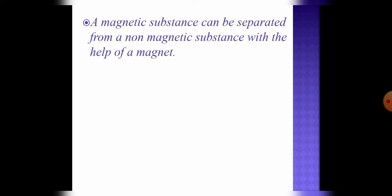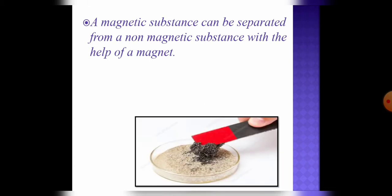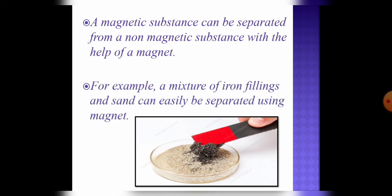And this is the best example of iron filing and sand mixture, which we can separate with the help of a magnet. This is the best example of non-magnetic and magnetic materials.